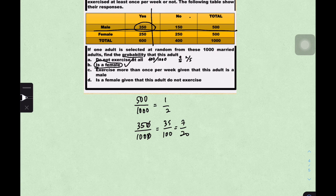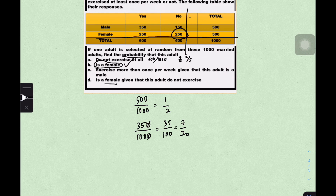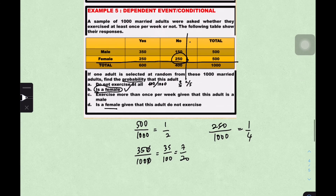Finally, the probability that the adult is female and does not exercise: females who don't exercise = 250, so P = 250/1000 = 1/4. This illustrates why the contingency table is a useful tool — it helps us represent and read our sample space clearly for probability calculations.